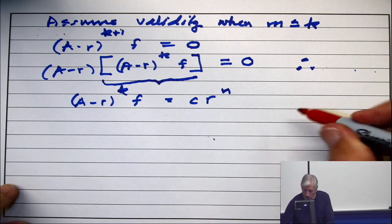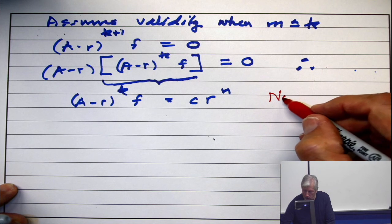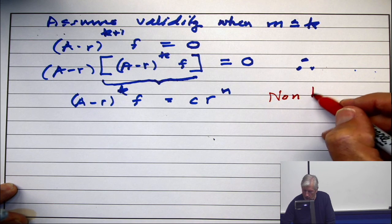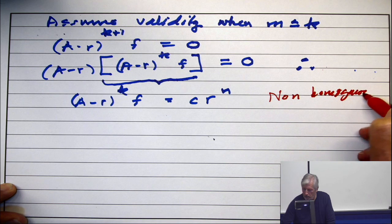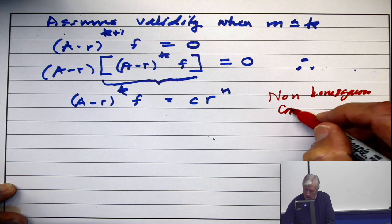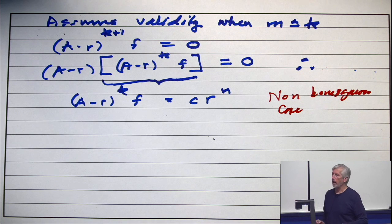Now, that is a non-homogeneous case. The right hand side is not 0.